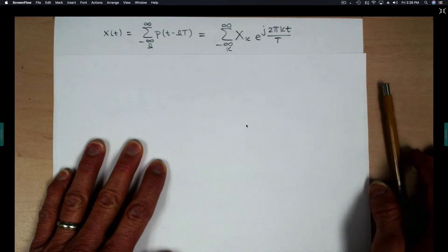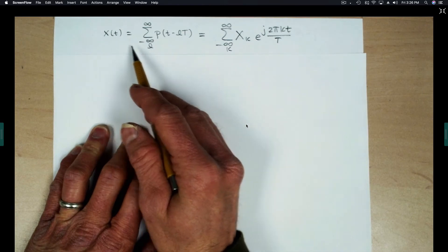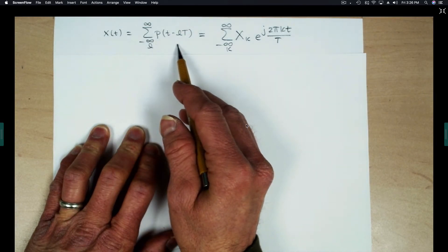This video is an example of calculating the Fourier transform of a periodic signal. In this case, the periodic signal is a train of pulses.